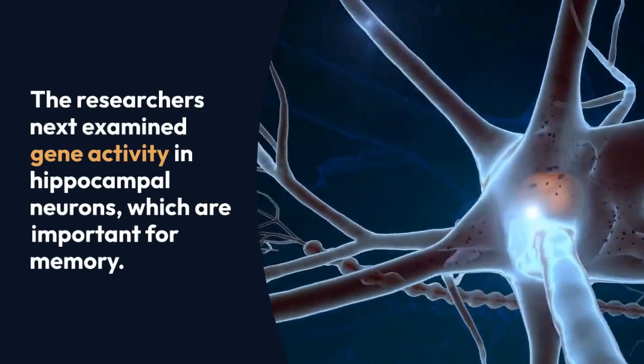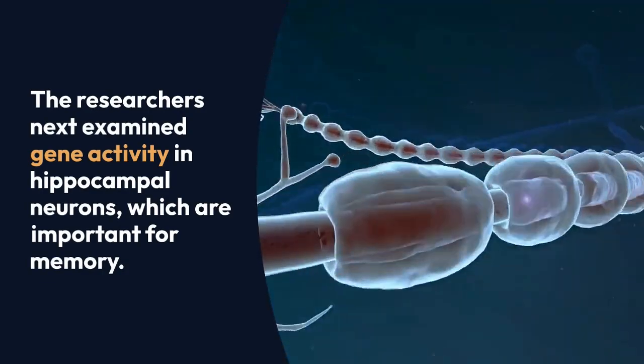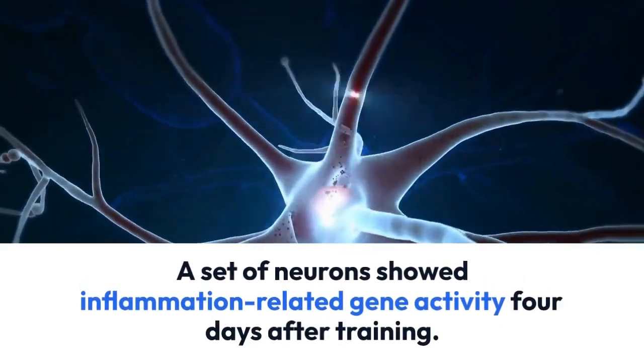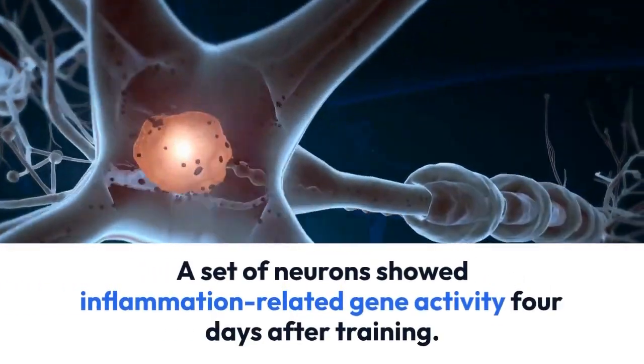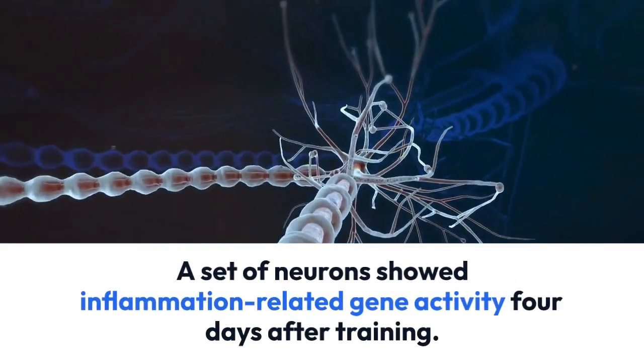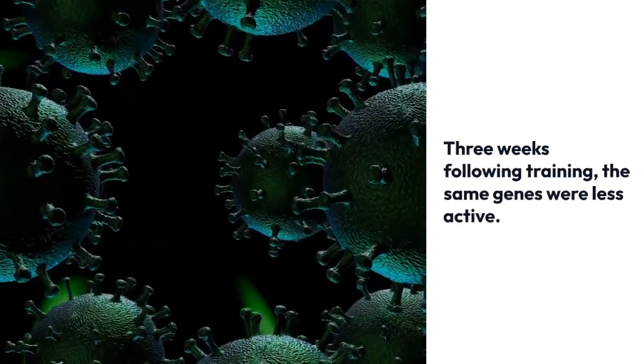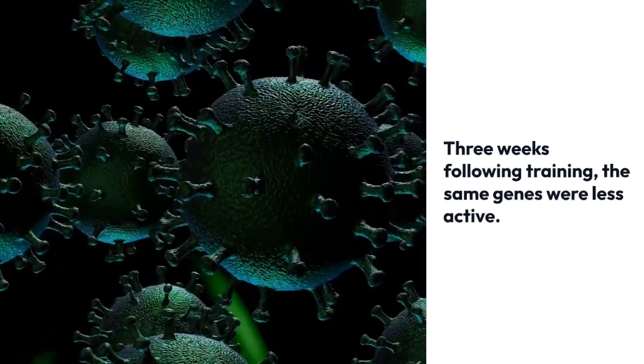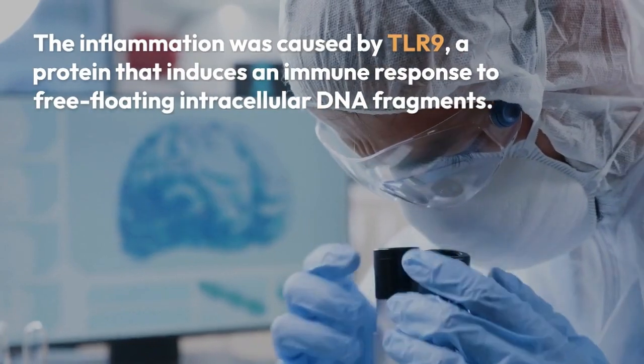The researchers then analyzed gene activity in neurons located in the hippocampus. Certain inflammation-related genes were active in a group of neurons four days after training. Much less activity was observed in the same genes three weeks after training.